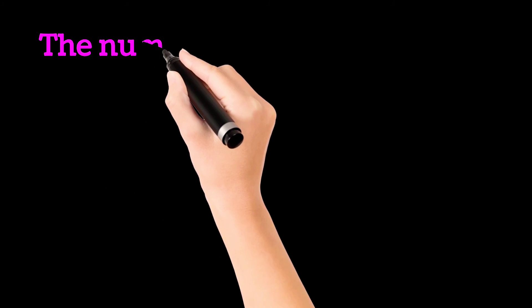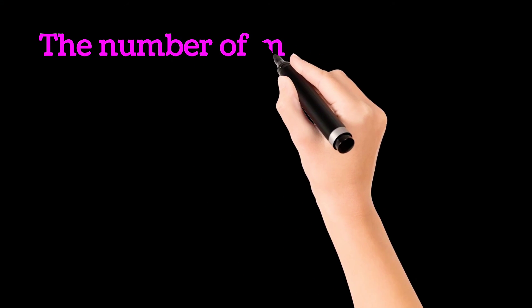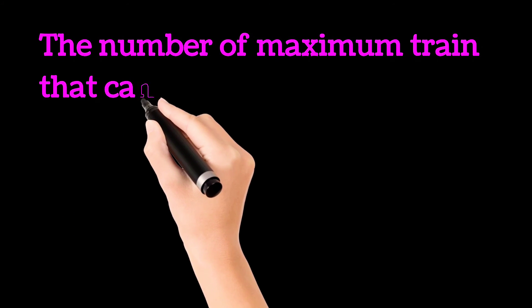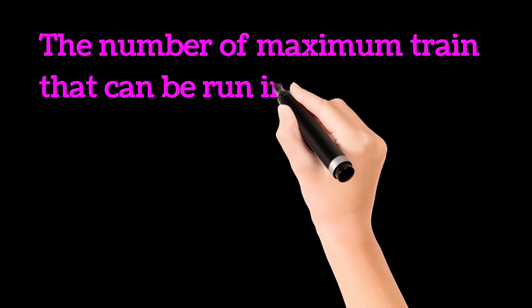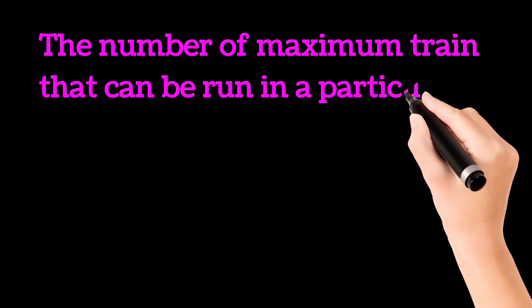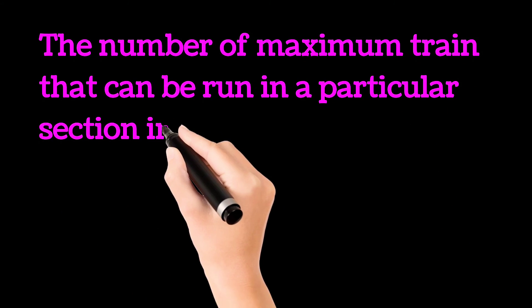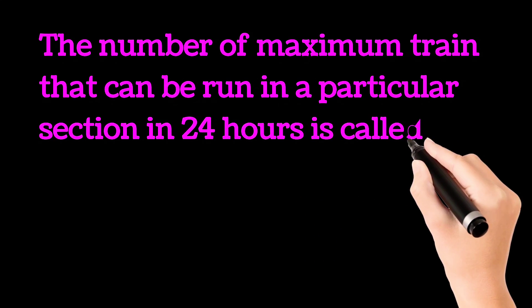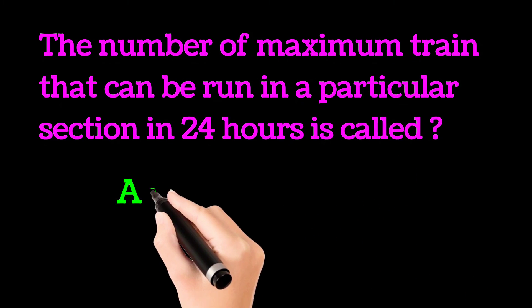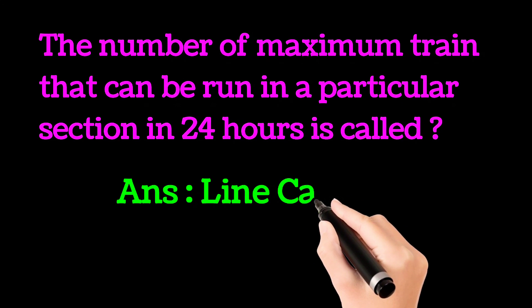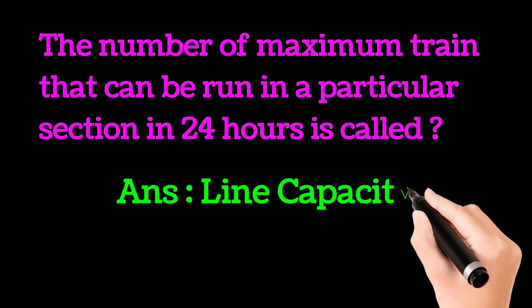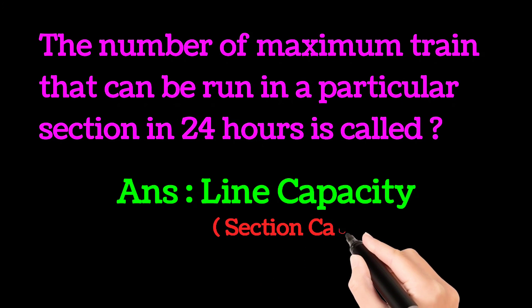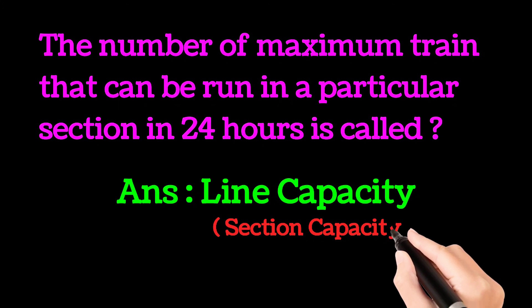Next very important question: the number of maximum trains that can be run in a particular section in 24 hours is called what? The correct answer is line capacity, or we can say section capacity. Thank you friends, thanks for watching my video.